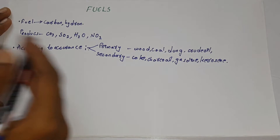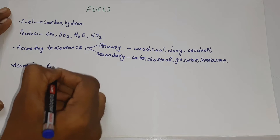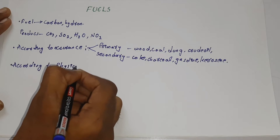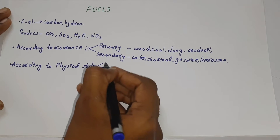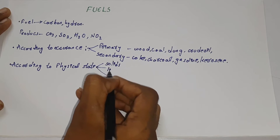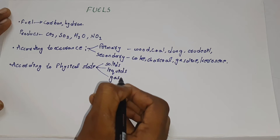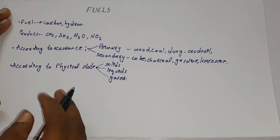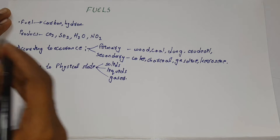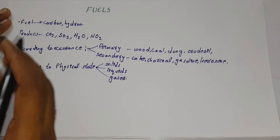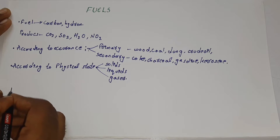Another consideration for the classification of fuels is according to physical state. According to physical state, fuels can be classified as solids, liquids, and gases. These are the three main forms. Within each of these three, there are primary solid fuels and secondary solid fuels, primary liquid fuels and secondary liquid fuels, and primary gaseous fuels and secondary gaseous fuels.